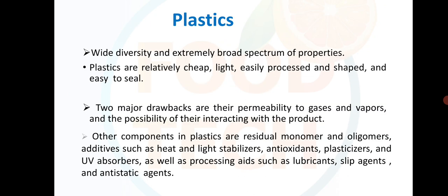Moving on to plastics — plastics provide wide diversity and an extremely broad spectrum of properties. Plastics are relatively cheap, light, easily processed and shaped, and easy to seal. Two major drawbacks are their permeability to gases and vapors and the possibility of their interacting with the product. Other components in plastics are residual monomers and oligomers, and additives such as heat and light stabilizers, antioxidants, plasticizers and UV absorbers.